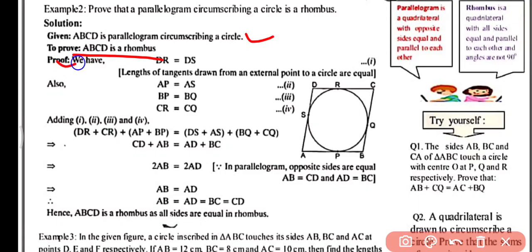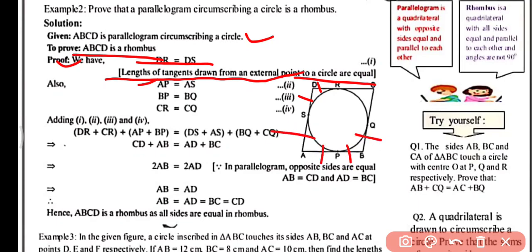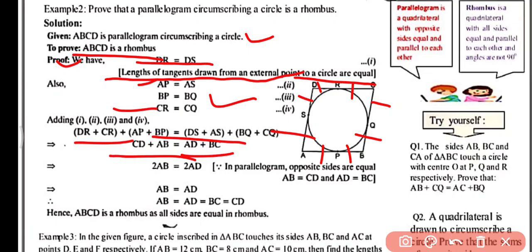We are given ABCD is a parallelogram circumscribing a circle. We need to prove ABCD is a rhombus. Since the length of tangents drawn from an external point to a circle are equal: DR equals DS, AP equals AS, BP equals BQ, and CQ equals CR. Adding all these relations, we get AB plus CD equals AD plus BC.